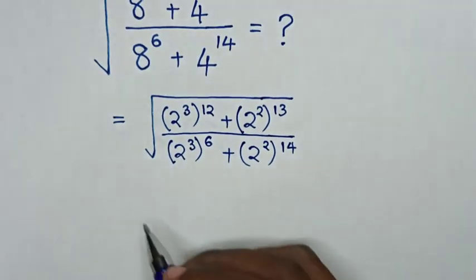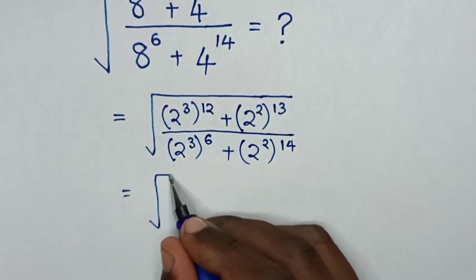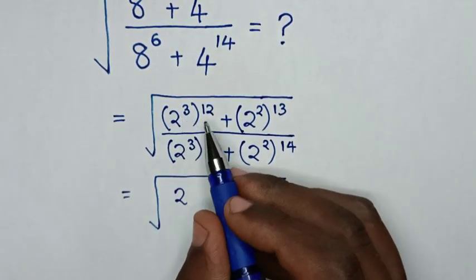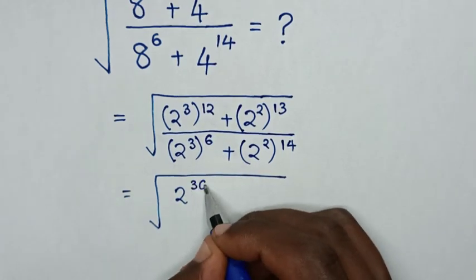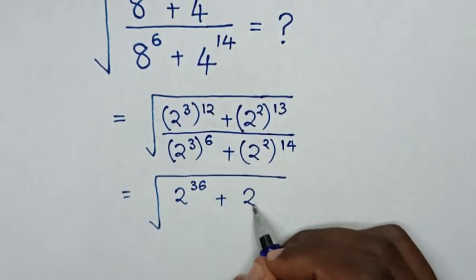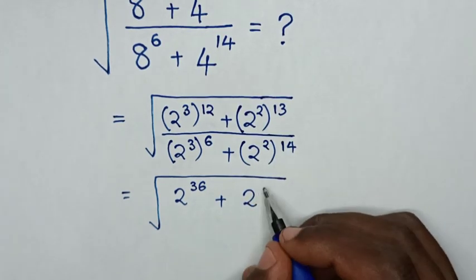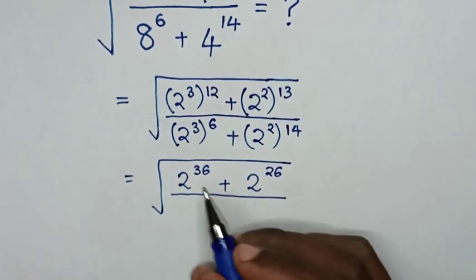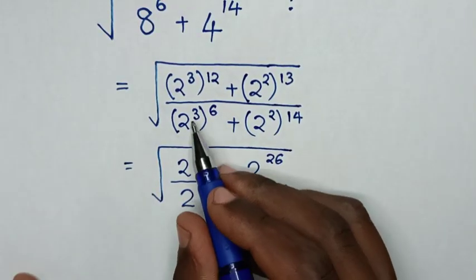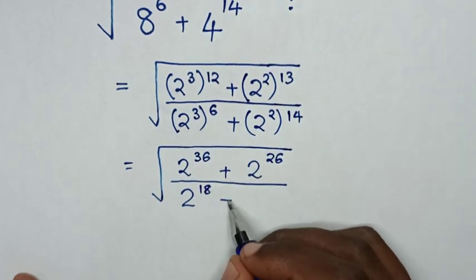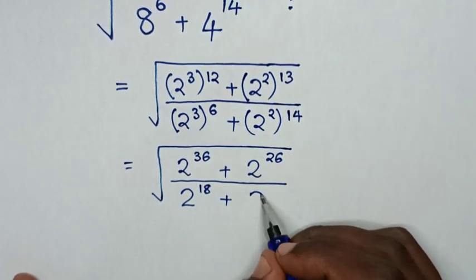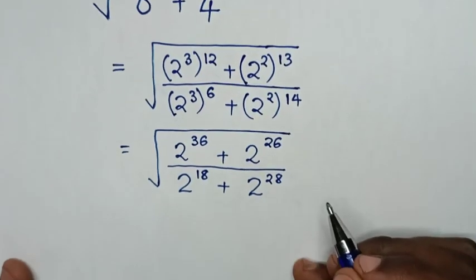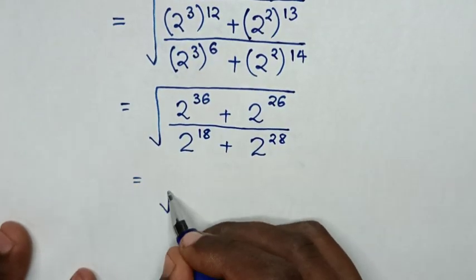Then it will be equal to square root of 2 power of 3 times 12, which is power 36, plus 2 power of 2 times 13, which is 26, over 2 power of 3 times 6, which is power 18, plus 2 power of 2 times 14, which is power 28.